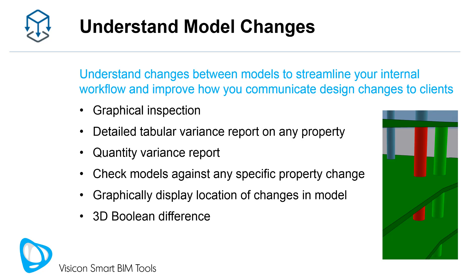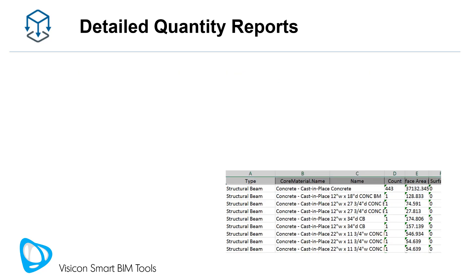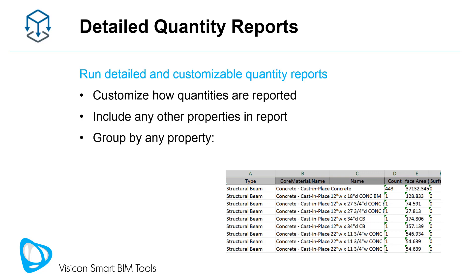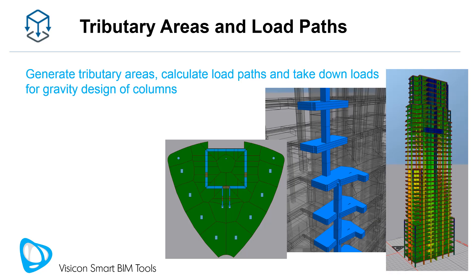Use 3D Boolean difference to identify exactly how the geometry of one model changed against another. Creating detailed and customizable quantity reports is very easy. You can determine how quantities are reported and include any other project properties in your report. Group and summarize quantities in a way that matters to your clients — group by component type, material, level, or any component size property or other model parameter.